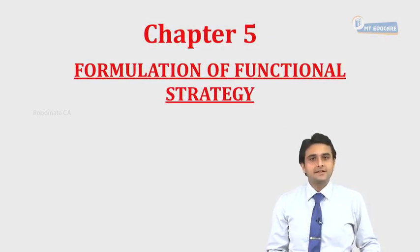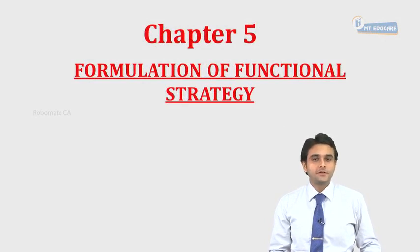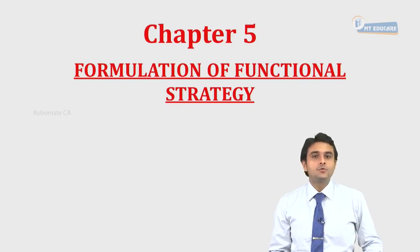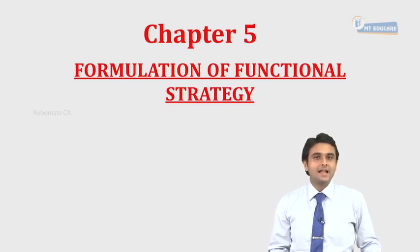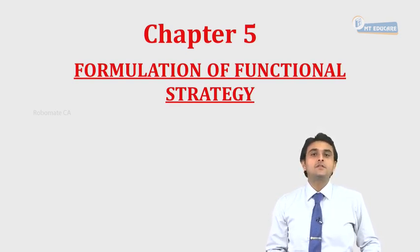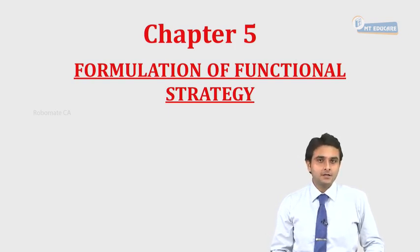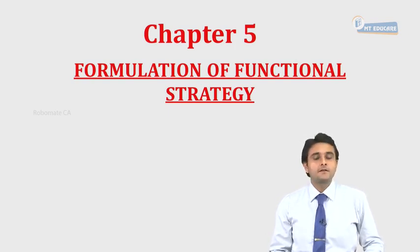After a business has decided which strategy to go with to fulfill its objectives, it needs to break down the strategies into the various functional strategies. Functions here refers to the various departments in an organization. In this chapter, we will discuss about four departments: marketing, production, finance, and human resource.